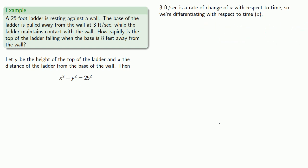We want to know how rapidly the top of the ladder is falling when the base is 8 feet away from the wall. And so that means we want to find dy dt when x is equal to 8.